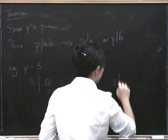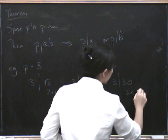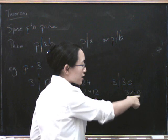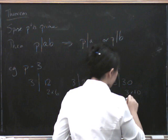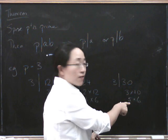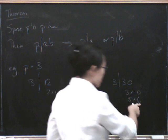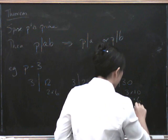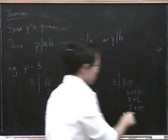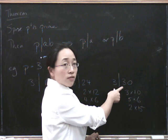And another one, 3 divides 30, which is 3 times 10. It divides 3, it doesn't divide 10, so it has to divide 3. Or we could say it's 5 times 6. Well, it doesn't divide 5, 3 doesn't divide 5, so 3 has to divide 6. Or we could say it's 2 times 15. 3 doesn't divide 2, so it has to divide 15 in order to divide 30.